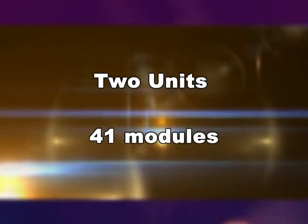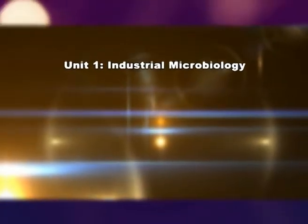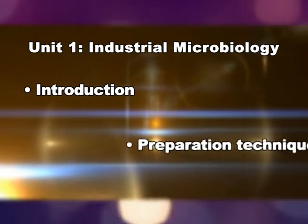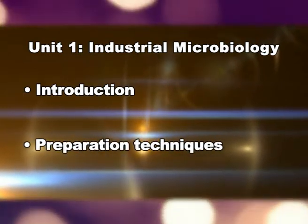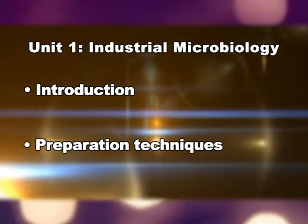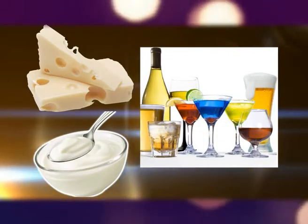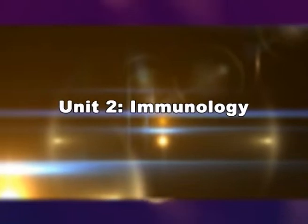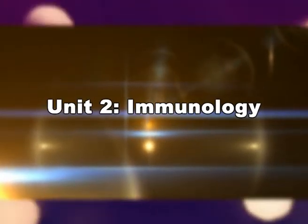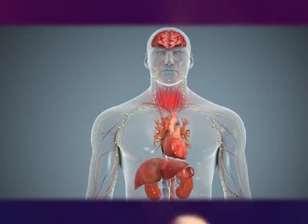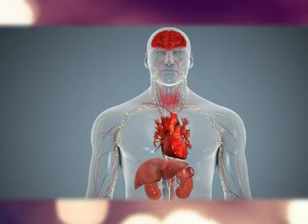The course content is divided into two units having 41 modules. The first unit deals with industrial microbiology — an introduction to the subject and different techniques used in the production of different fermented products like yogurt, cheese, alcoholic beverages, etc. The second unit deals with immunology — our immune system, the cells and organs present in our immune system, and how the immune system fights back against foreign molecules.